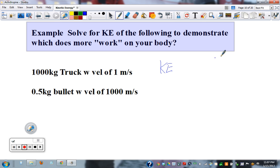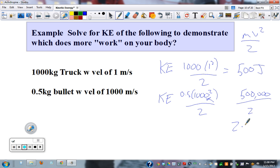Kinetic energy equals mass times velocity squared over 2. So this is a thousand times 1 squared over 2, which equals 500 joules. The bullet is 0.5 times 1,000 squared divided by 2. This is a million times 0.5 is 500,000 divided by 2, so it's 250,000 joules.